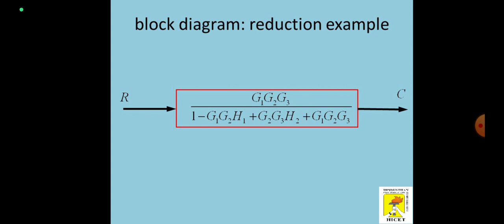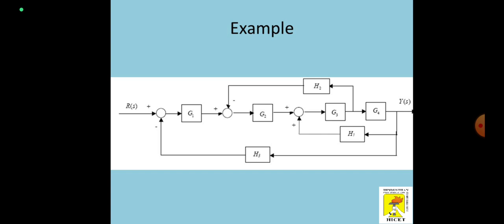This is the way you can reduce block diagrams. To implement all the formulas, we interchanged the summing points, but in actual cases we do not require such complexity — you can simply replace the H1 branch point ahead of G3 and solve it in a simple way. You can go through some examples to get other ideas. Here, if you see this block diagram, the H2 point should be moved ahead of G4; then I will get G1, G4, H1 as a single block. The answer with G2 multiplication and H2 as feedback forms the second block, and that answer combined with G1 and H1 feedback gives the third loop.